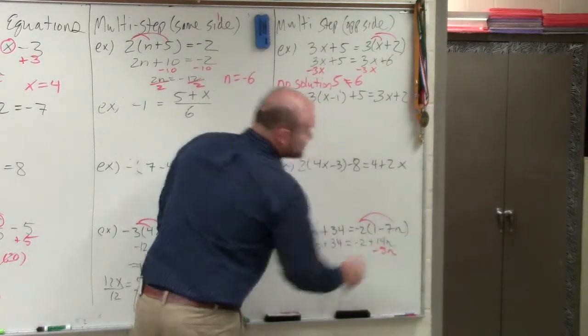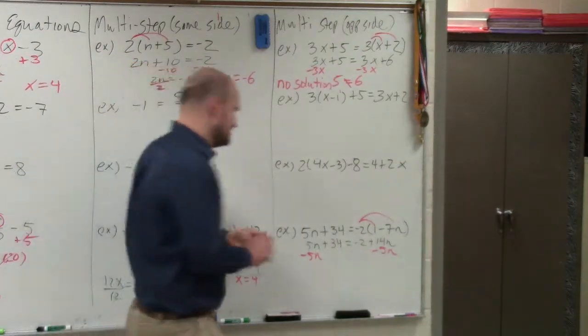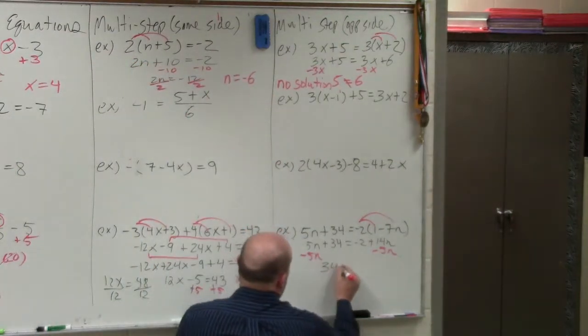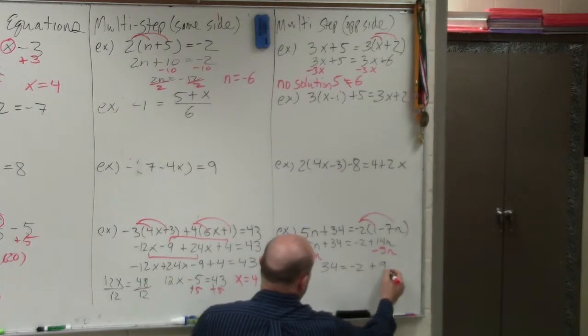And again, it doesn't mean it's wrong. If you subtracted 14n, you're not wrong by any means. It's just through practice, this is what I like to do. So therefore, we have 34 equals negative 2 plus 9n.